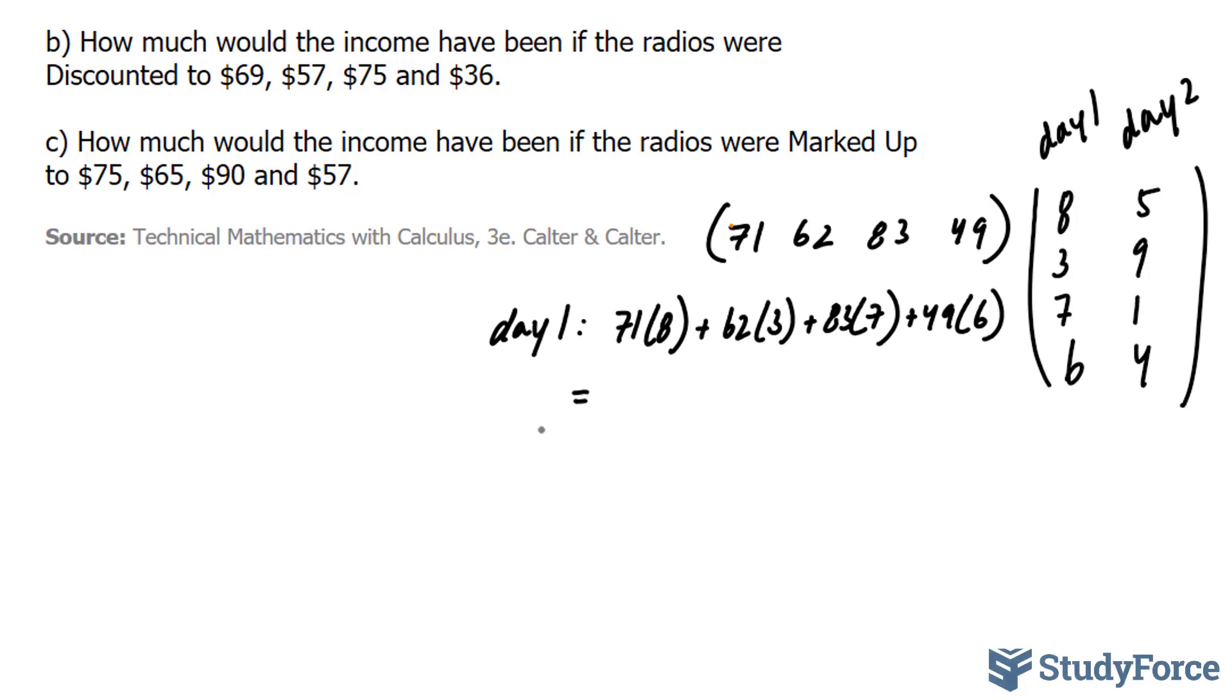Multiplying and adding all of these up should give you how much was made on day one. And on day two, you should have the same thing: 71 times 5 plus 62 times 9 plus 83 times 1 plus 49 times 4. Let's use our calculator now to find out the answers. If you've done this correctly, you should end up with the following two answers.